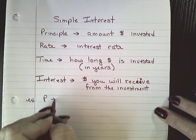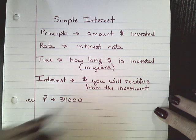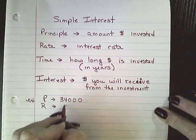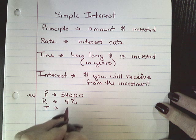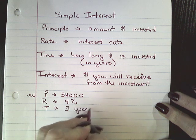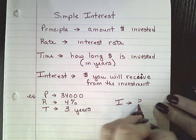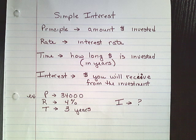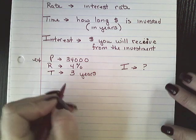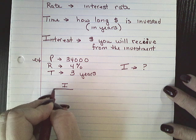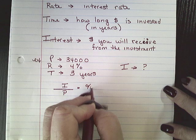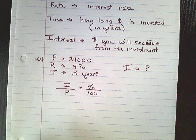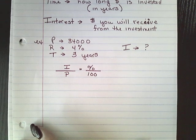We have a principal of $34,100, a rate of 4%, and a time of three years, and we want to find the interest. We're going to use our proportion, and this time we're going to put interest over principal. The interest is part of the whole, and the whole is the principal. We always keep our percent ratio the same, and I'll show you how the time fits in when we find our answer.